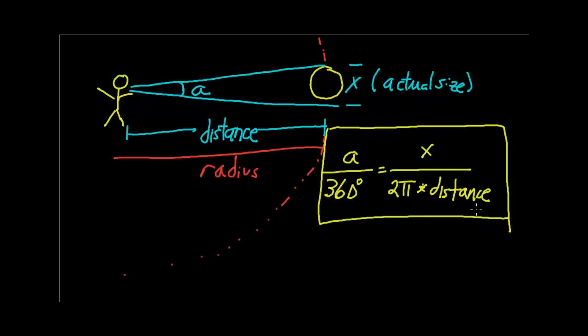Let's do an example. Let's imagine that we are looking at the moon, and the moon's size in the sky is about 30 arc minutes, and let's say that we know the distance.